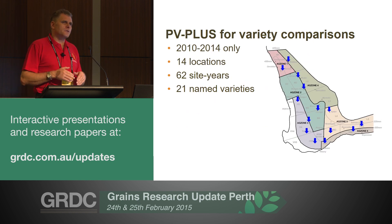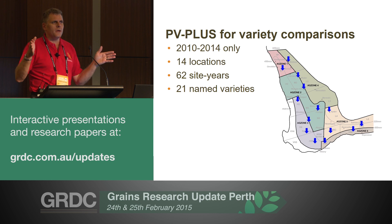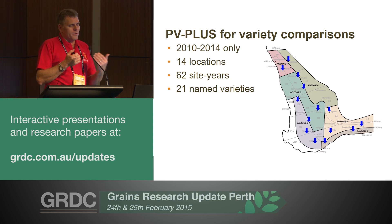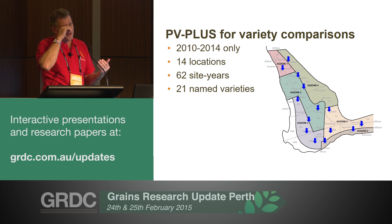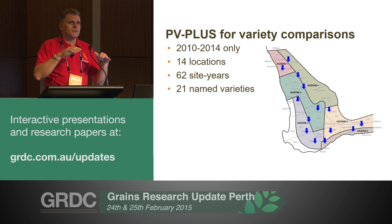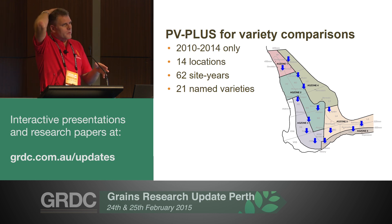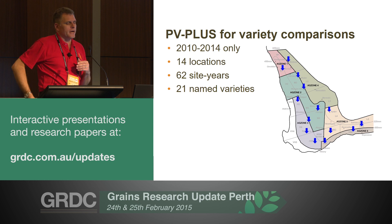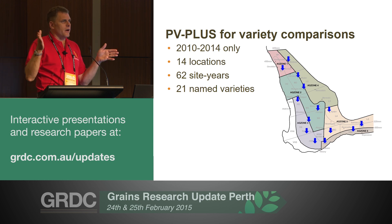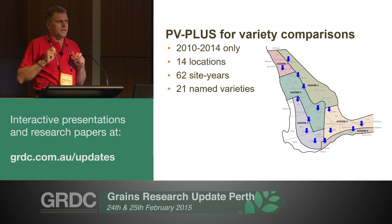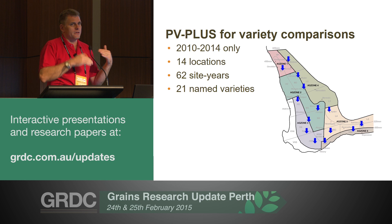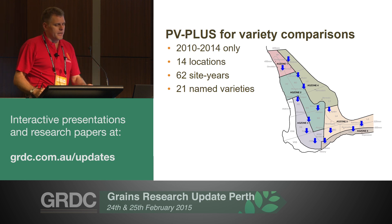Moving to the PV Plus system, we bring it down from the 10-year window to the last five years. I've had Chris prepare graphs for 14 locations. I'm going to give examples from different locations — the blue arrows indicate where the data sets are from. In most cases there's five years of data at each location, giving a combination of 62 site years of data and 21 varieties in the database.